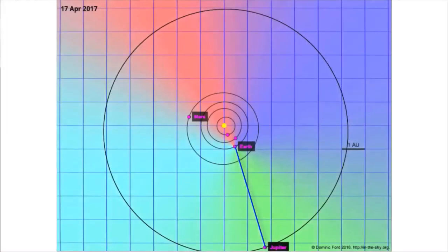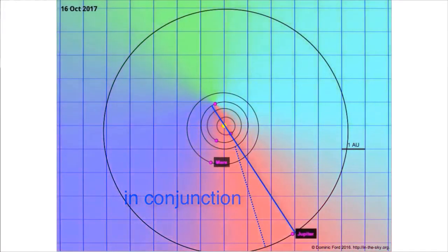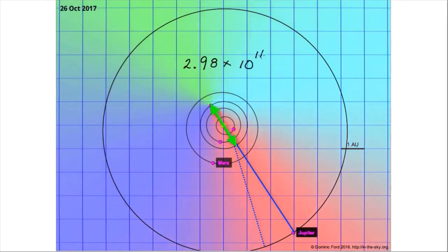Now, the distance between Earth and Io is very different when Jupiter is in opposition and in conjunction. It differs by the orbital diameter of Earth. It's a huge distance, 2.98 times 10 to the 11 meters.